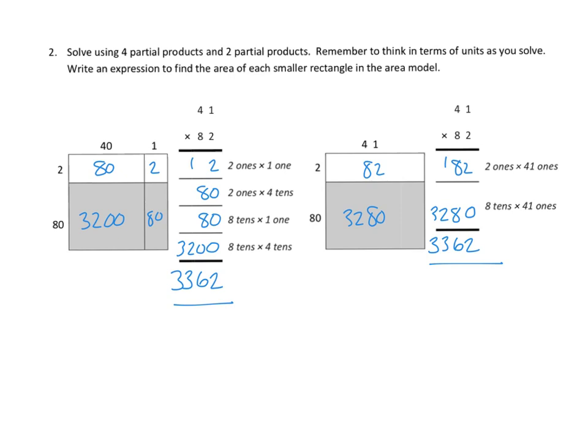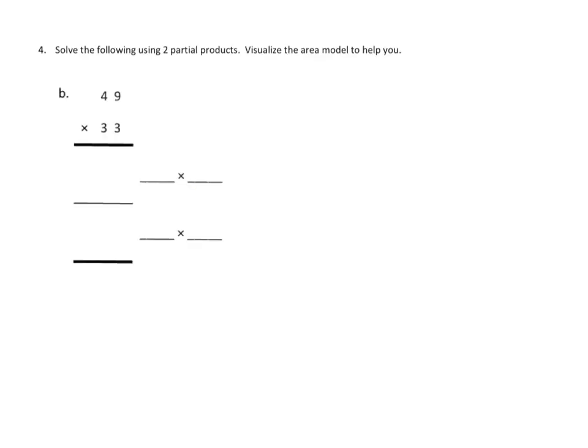And if we look at our next problem, we'll see the way that we think about that kind of a problem without using the area model. We're just going to visualize the area model this time and see how that works for us. So let's take a look at the problem. The problem says 49 times 33. We can think of this as two separate problems. We can think of this as breaking it down.